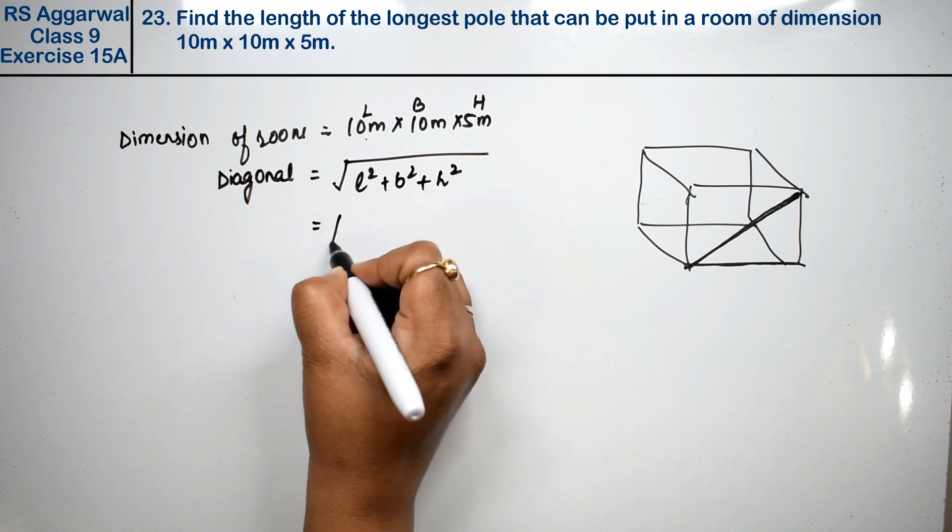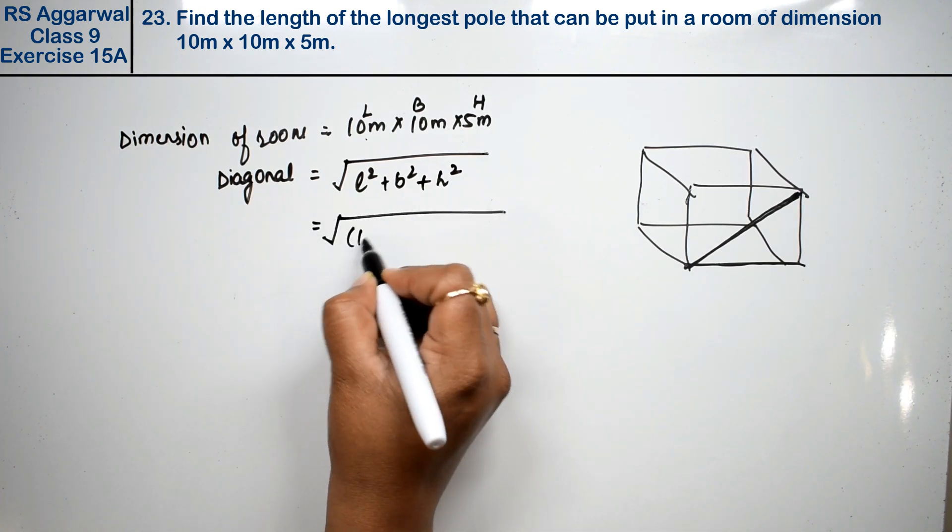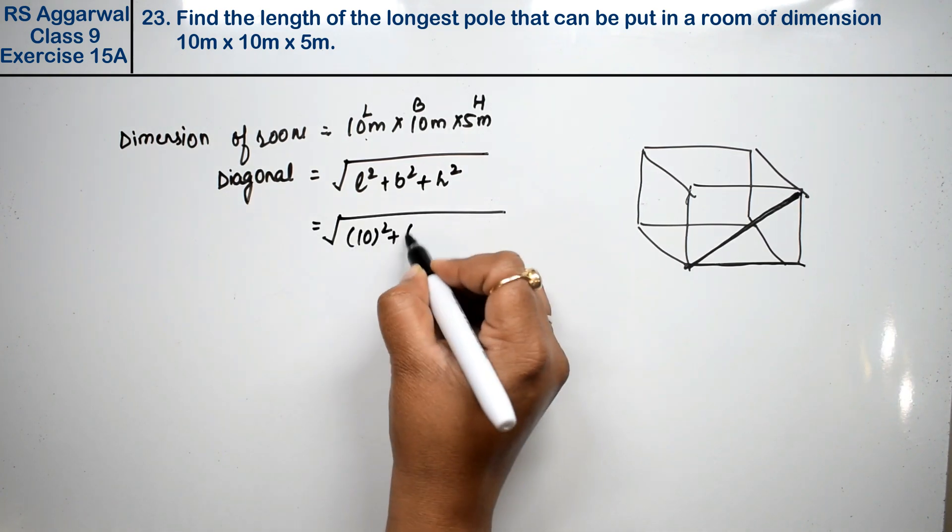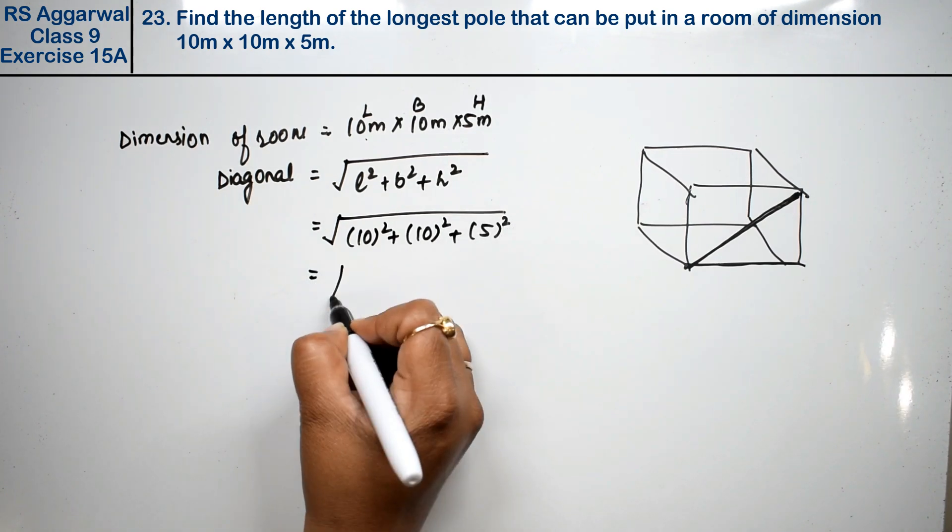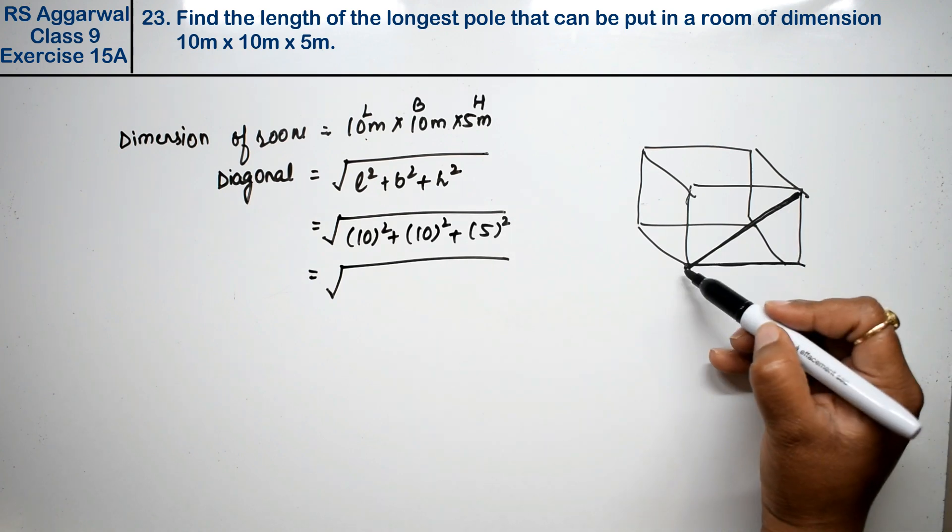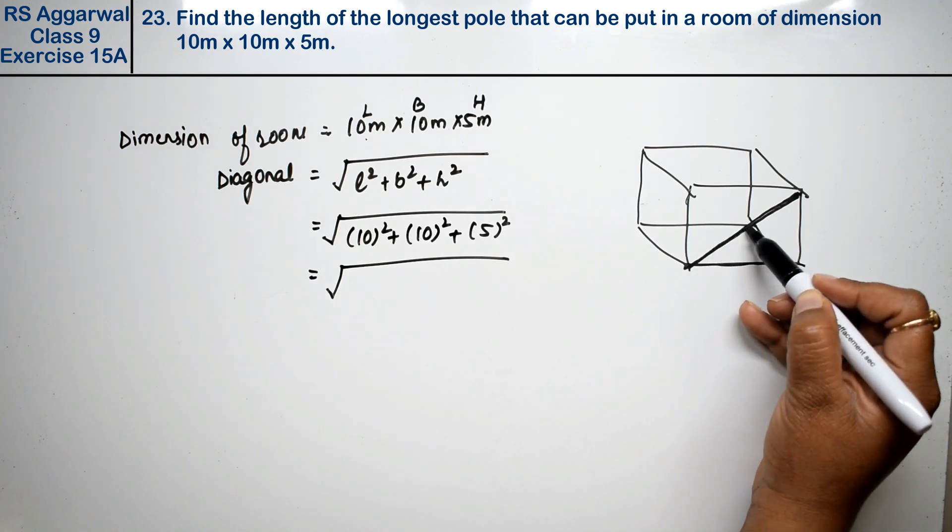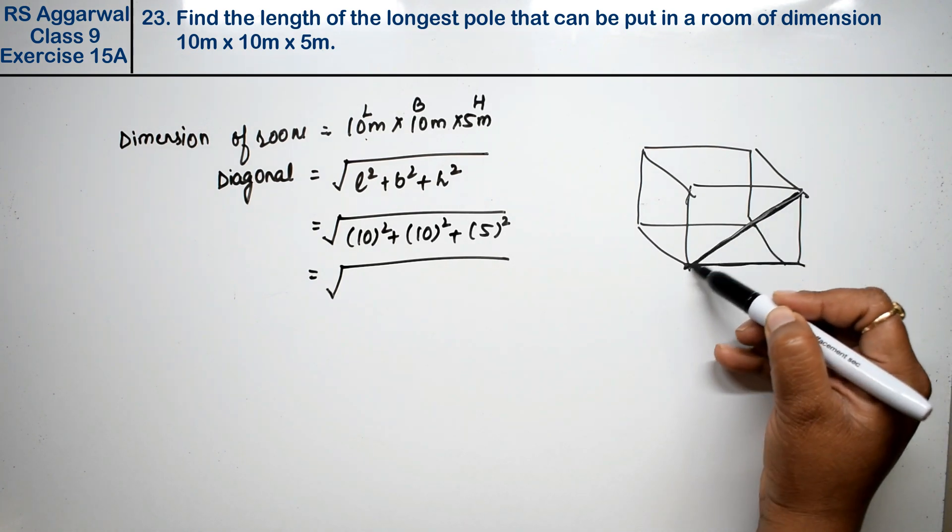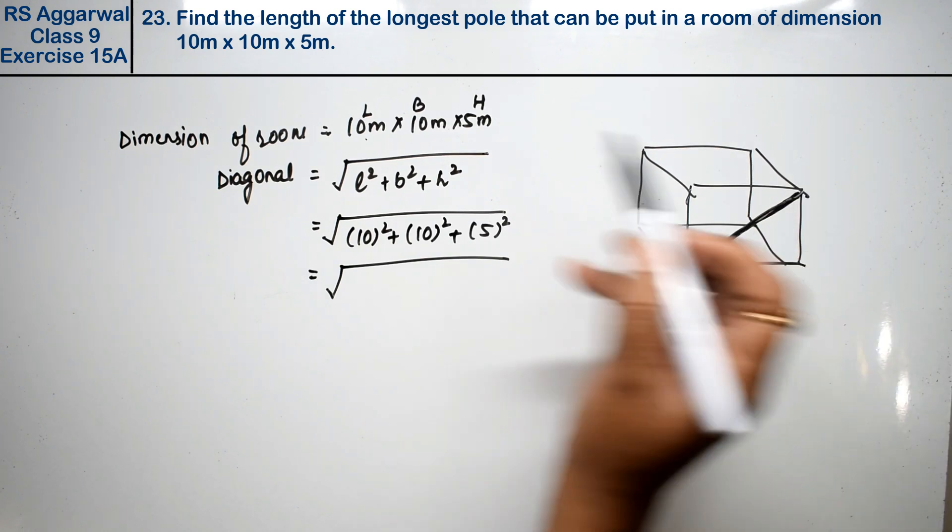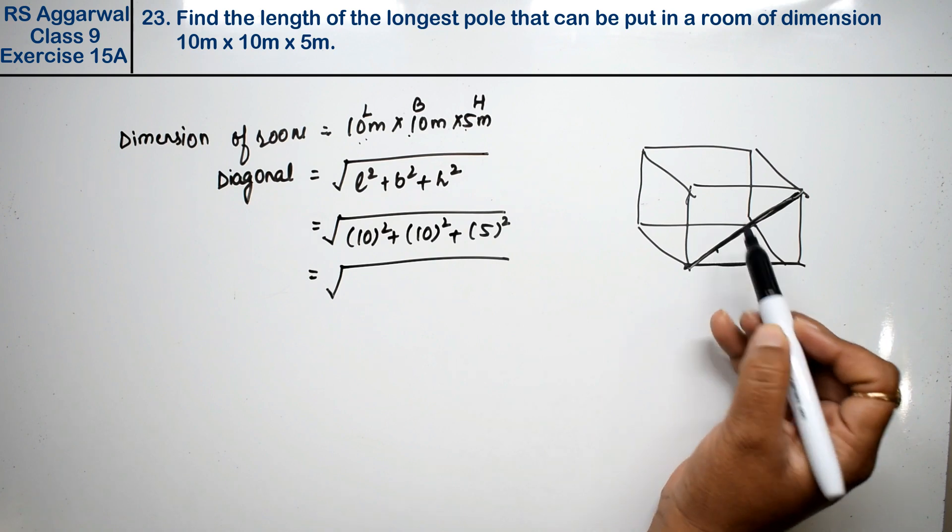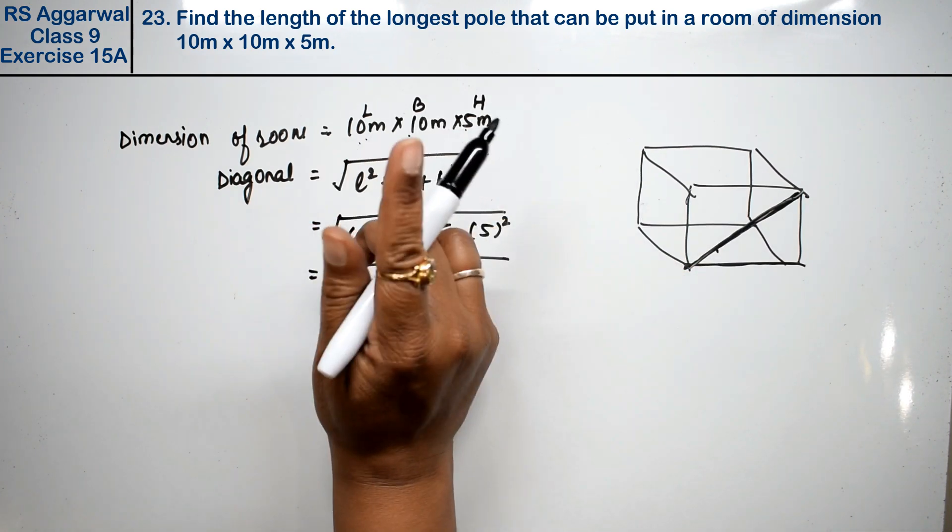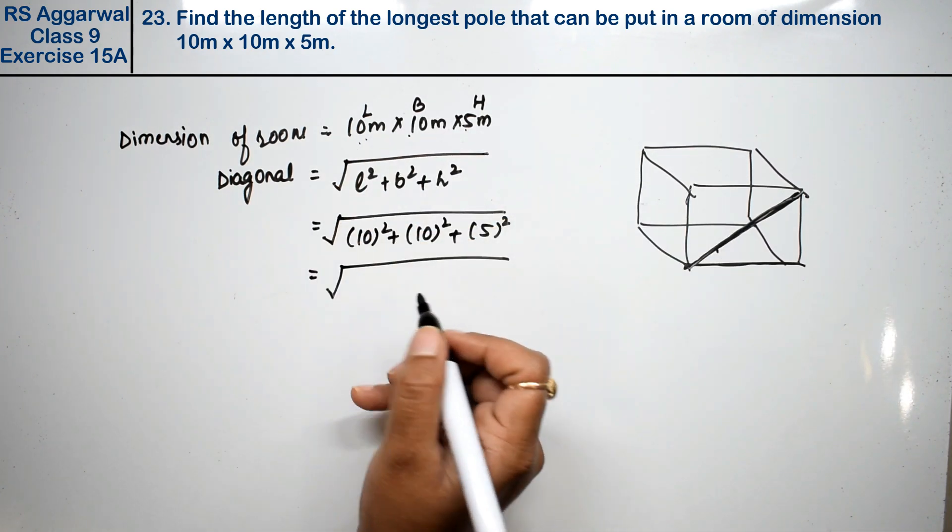So L is 10 squared plus breadth is 10 squared and height is 5 squared. Always remember that when you say the longest pole question, that means we have to take a diagonal. And if the dimensions are different then it's a cuboid. Right friends?